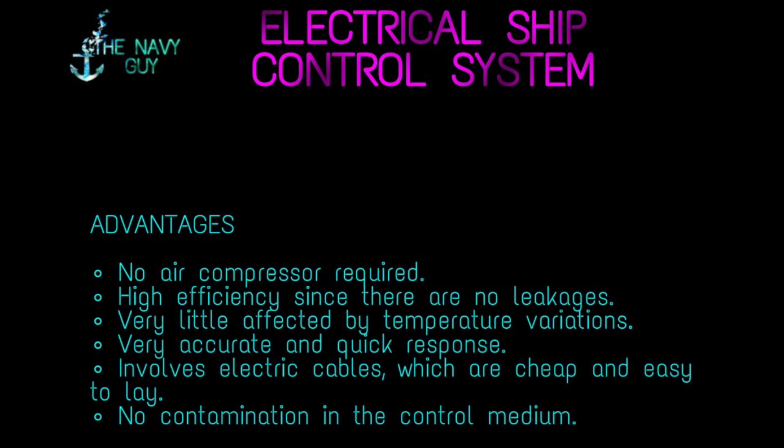Some advantages of the electrical ship control system are: no air compressor or associated machinery is required; it has high efficiency since there are no leakages; it is very little affected by normal temperature variations; the system has a very accurate and quick response; it involves electric cables which are cheap and easy to lay; and there is no entrainment or contamination in the control medium.